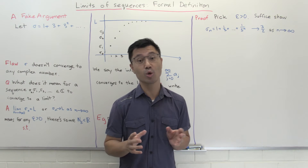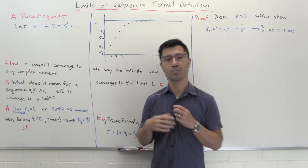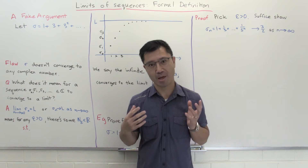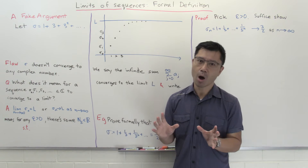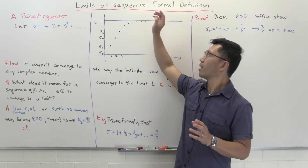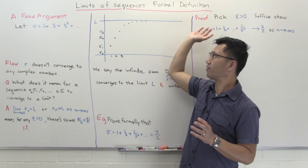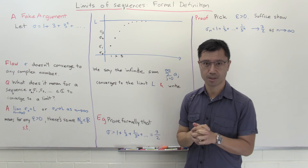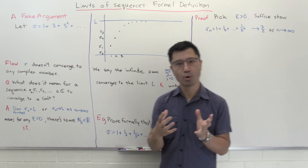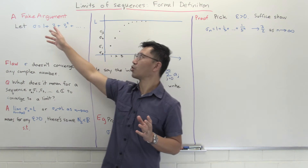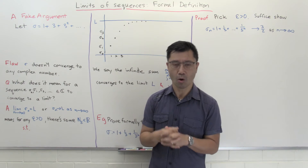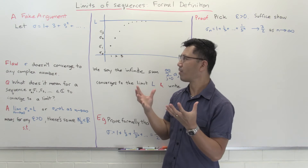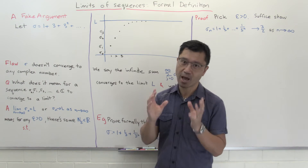Hi, I'm Daniel Chan from UNSW Sydney. Welcome to another video in the Extension 3 Mathematics video series. In this video I want to talk about the formal definition of a limit of a sequence of complex numbers. To prep you, I want to give you a fake argument of the type that Euler might give, which shows how you have to be careful when playing around with the notion of limit.